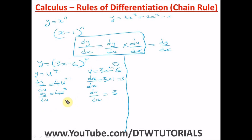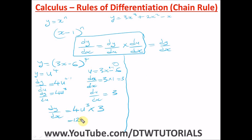Now apply the chain rule: dy/dx = dy/du × du/dx = 4u³ × 3 = 12u³. Since u = 3x − 6, our final answer is dy/dx = 12(3x − 6)³. That is the derivative of the original expression.